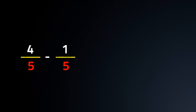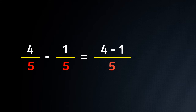Our problem is 4 by 5 minus 1 by 5. Now, we shall subtract numerators. 4 minus 1, and we shall keep denominator same, i.e. 5. So, our subtraction is 3 by 5.